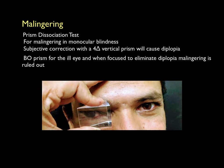In the double prism test, a base-to-base double prism is properly aligned in front of the good eye and an opaque occluder is placed in front of the malingering blind eye. A horizontal line is shown to the patient in front of the good eye. Normally, because of the two base-to-base aligned prisms, the patient will see two lines, but a malingerer, in order to prove themselves blind, will say they can see only one line.